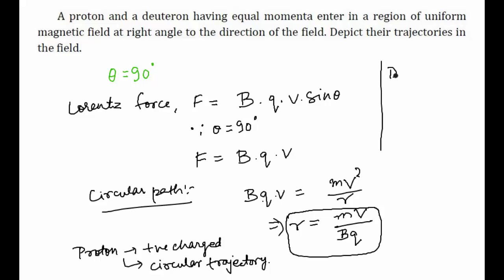a deuteron is uncharged, it will not be deflected in the magnetic field.